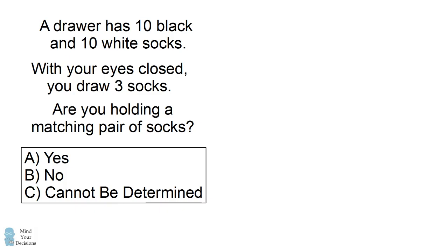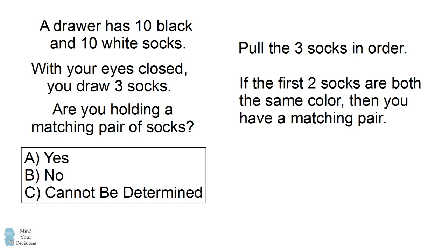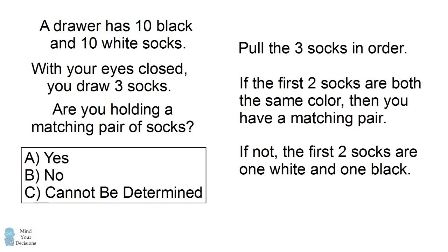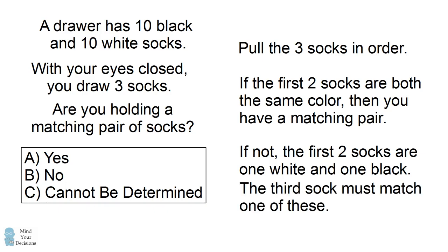Now let's tackle the next problem. Imagine that we draw the three socks in order. It could be the case that the first two socks you pull are both black or both white — in that case, you would already have a matching pair before you even pull the third sock. Now what if that's not the case? Then the first two socks would have to be different colors — one white and one black. Then when you pull the third sock, it would have to be either a white sock matching the white sock you already have, or a black sock matching the black sock you already have. The third sock must match one of the socks you already have. Therefore, in either case, you will always be holding a matching pair of socks.